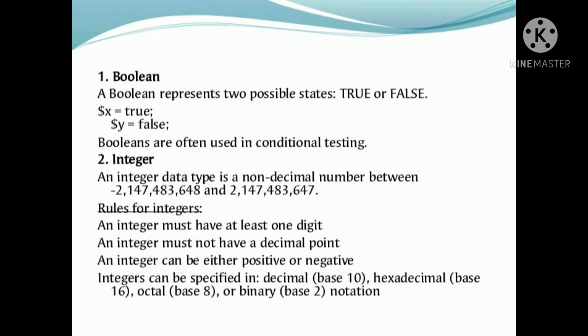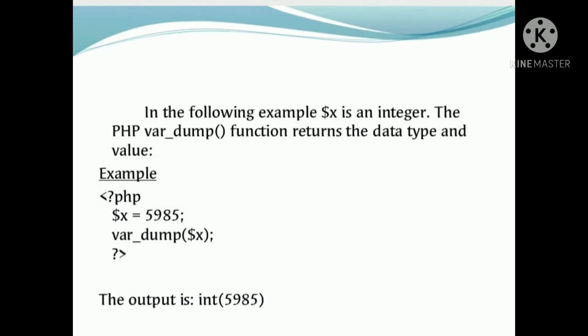The second data type is integer. In the integer type, an integer must have at least one digit — minimum one digit. We can accept positive values and negative values. Base 16 is hexadecimal, base 8 is octal, and base 2 is binary notation. We need to specify the integer and store it. For example, a variable $x assigned the number 5985.